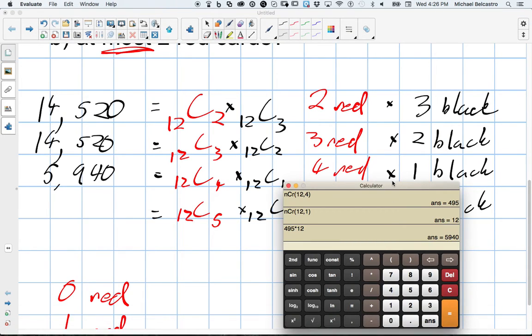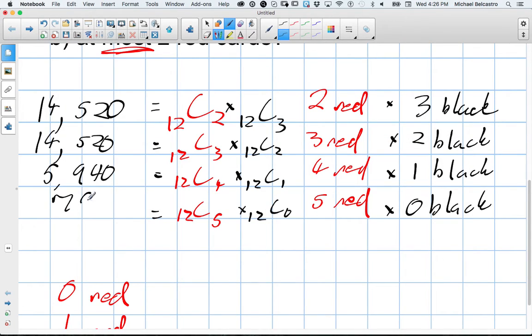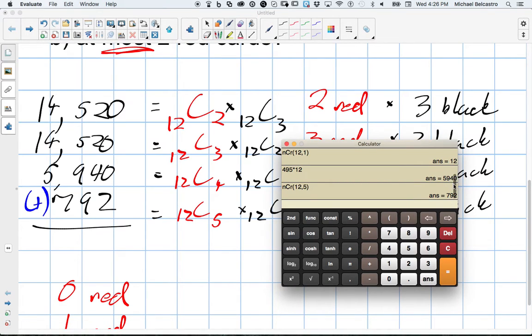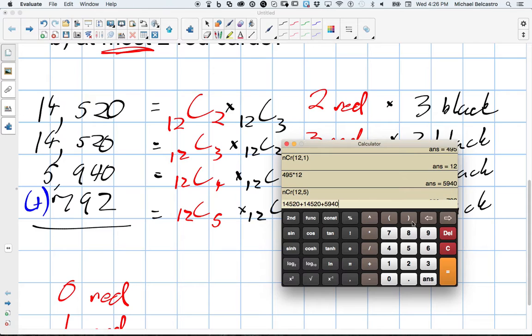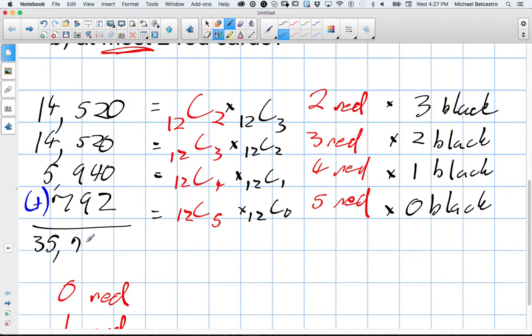And then finally, the combination of 12 choose zero is going to be one. So the only combination we really have to calculate is how many ways can we choose five out of that? 792. So 792. So now that we have all of these, we need to add all of them together to get an answer here. We had 14,000 plus 14,000 plus the 5,940 plus the 792. Gives us 35,722.